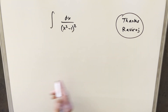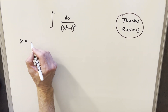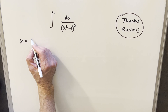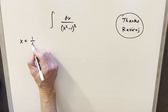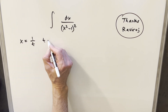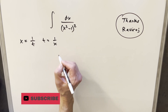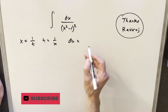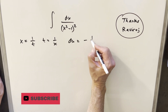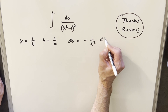For this method, the first step is to do a substitution: x equals 1 over t. Rearranging, we can see that t is the same thing as 1 over x. And dx is just going to be minus 1 over t squared dt.